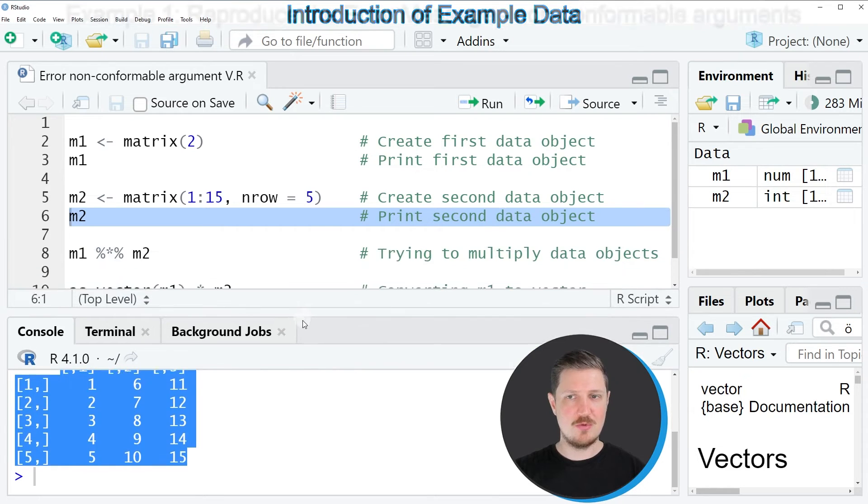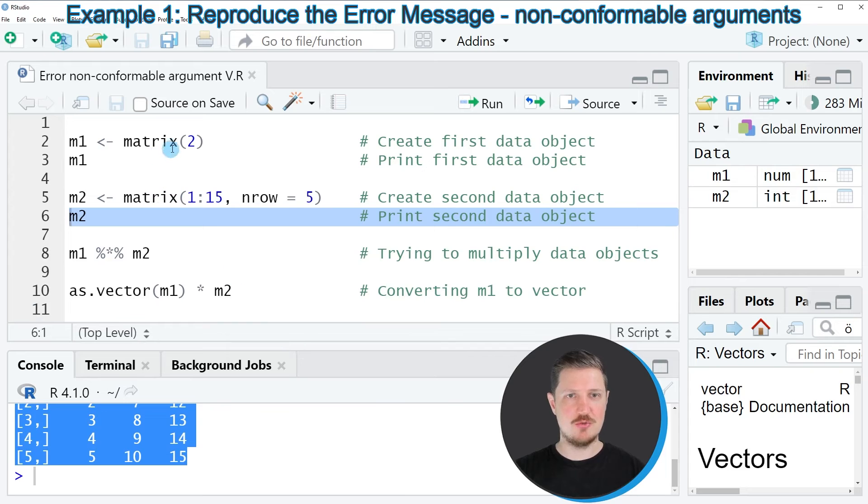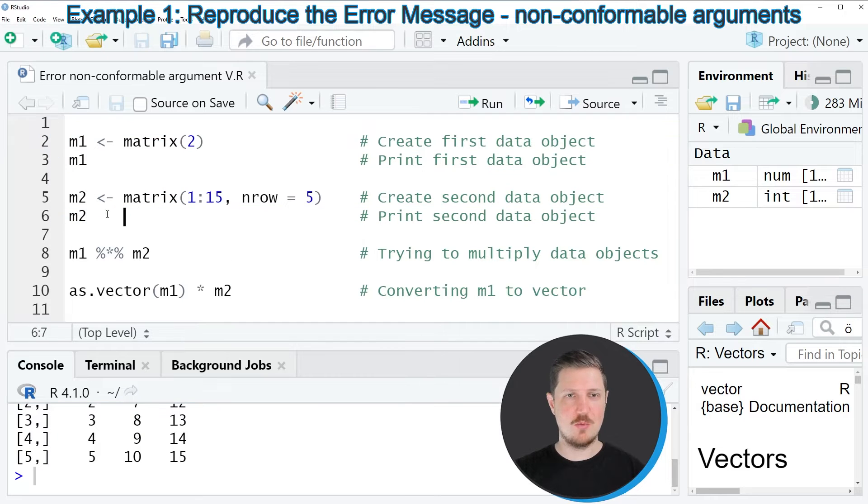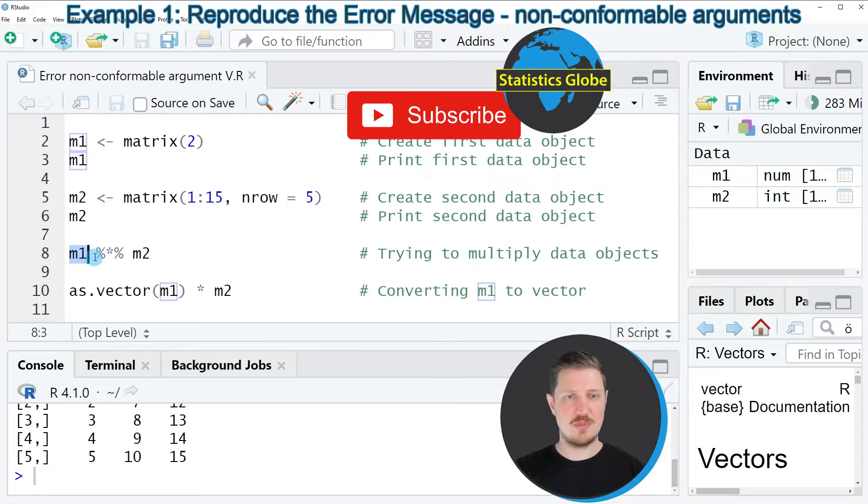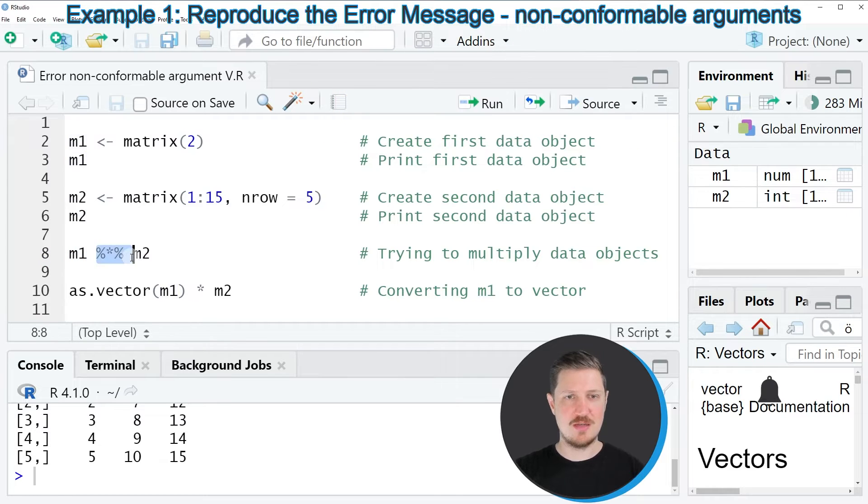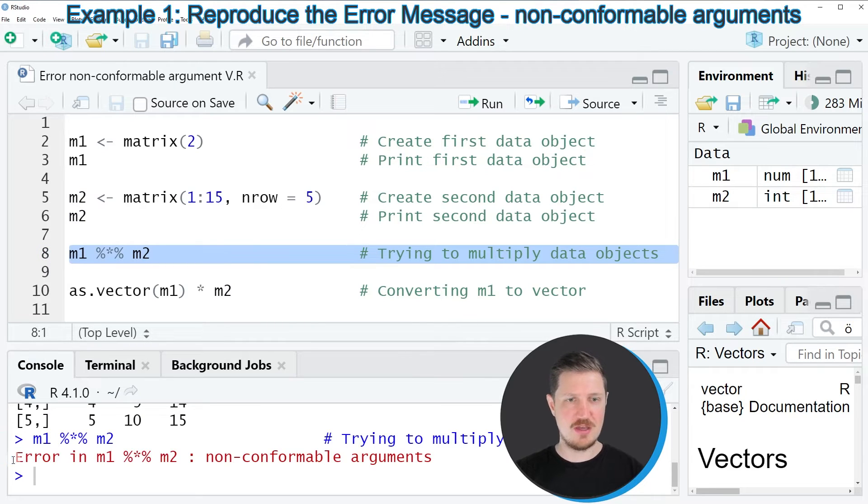Now let's assume that we want to multiply the value 2 in the first matrix with our matrix object m2. Then we might try to apply the code that you can see in line 8. In this line of code I'm using the first data object, then I'm specifying this multiplication operator and then I'm using the second data object. However after executing this code you can see that the error message error in m1 times m2 non-conformable arguments is returned.